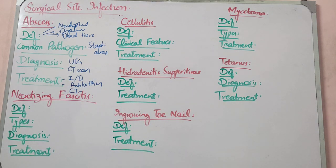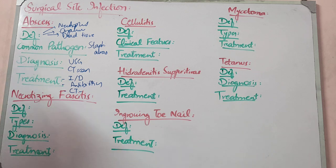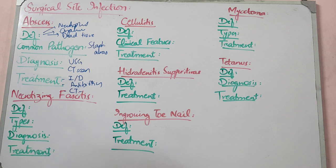Now for necrotizing fasciitis: if you have a patient with widespread erythema, blistering, and necrosis of the skin and tissue, it is a serious condition. You have to differentiate it. If a lower limb is red, hot, tender, with no blistering or blood, it is cellulitis.